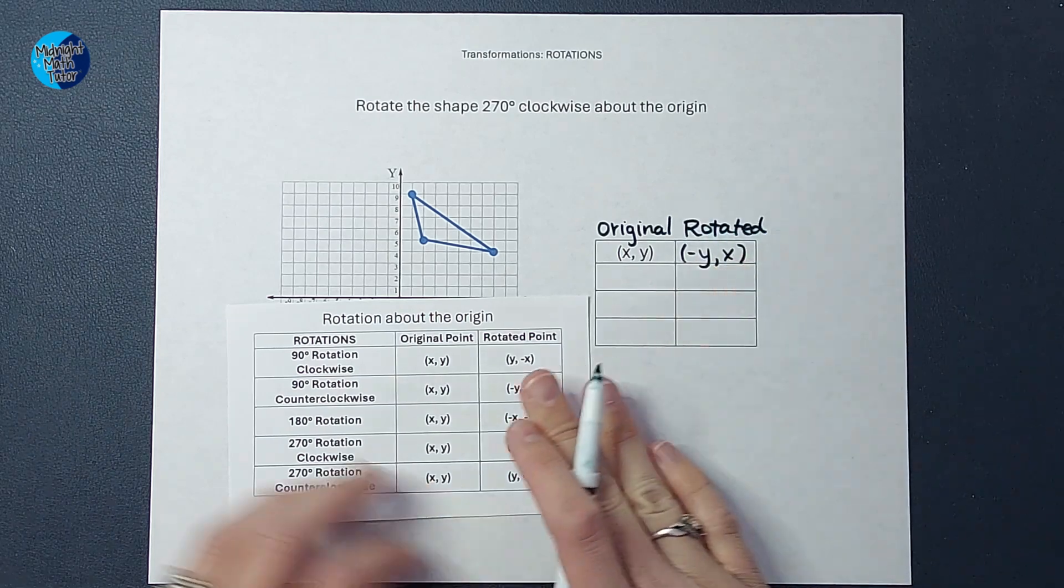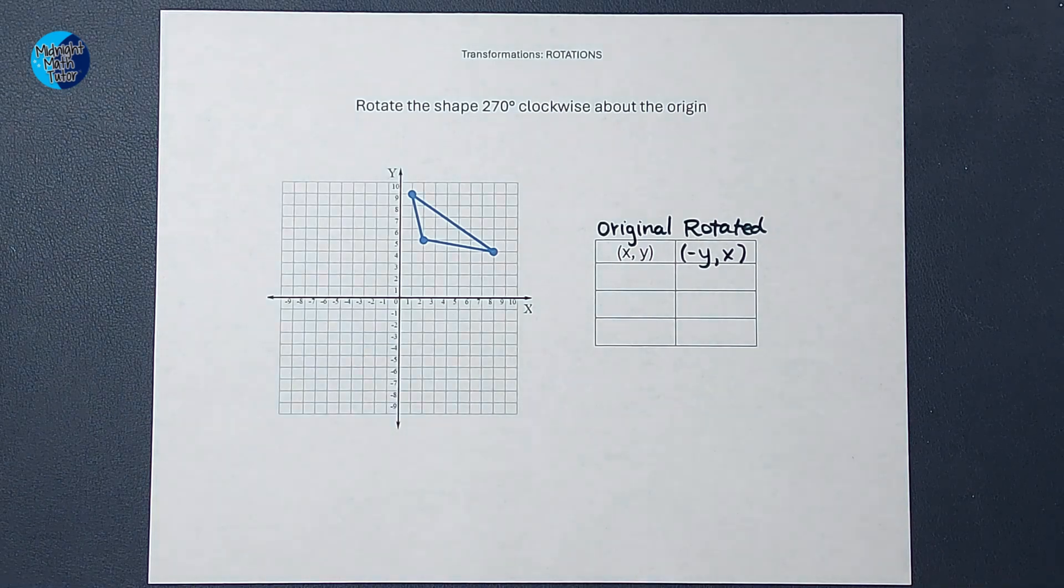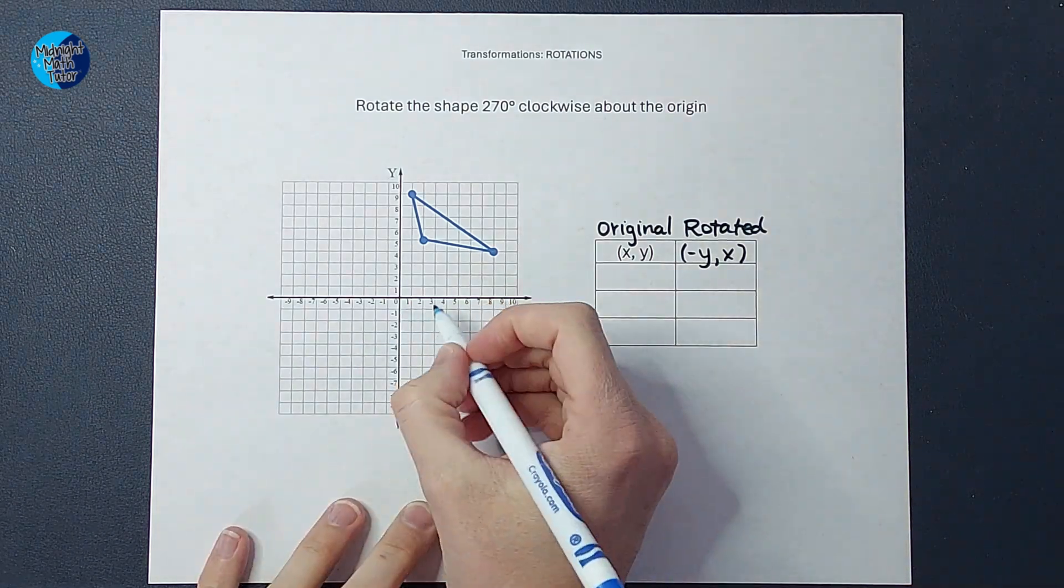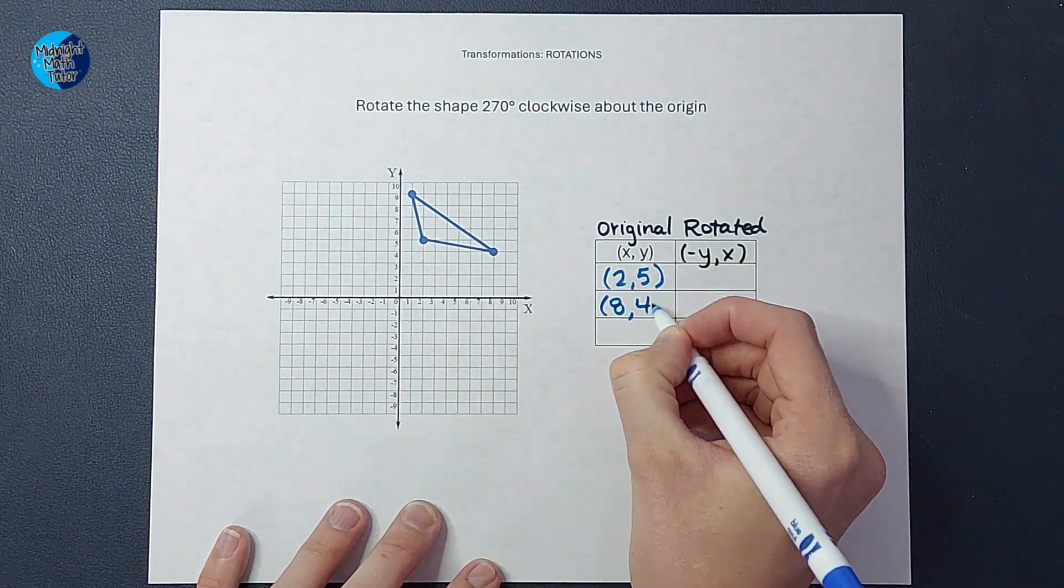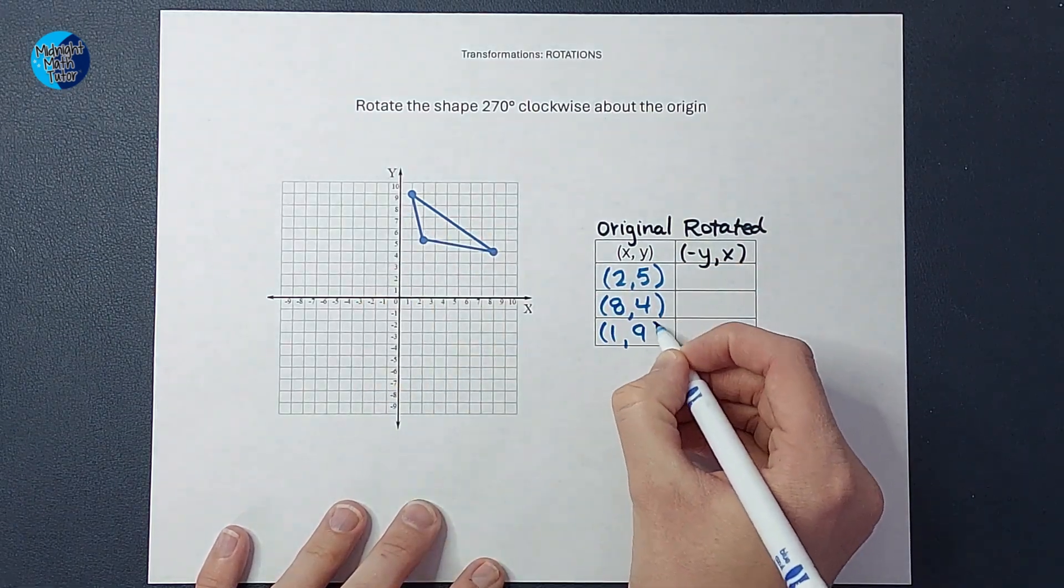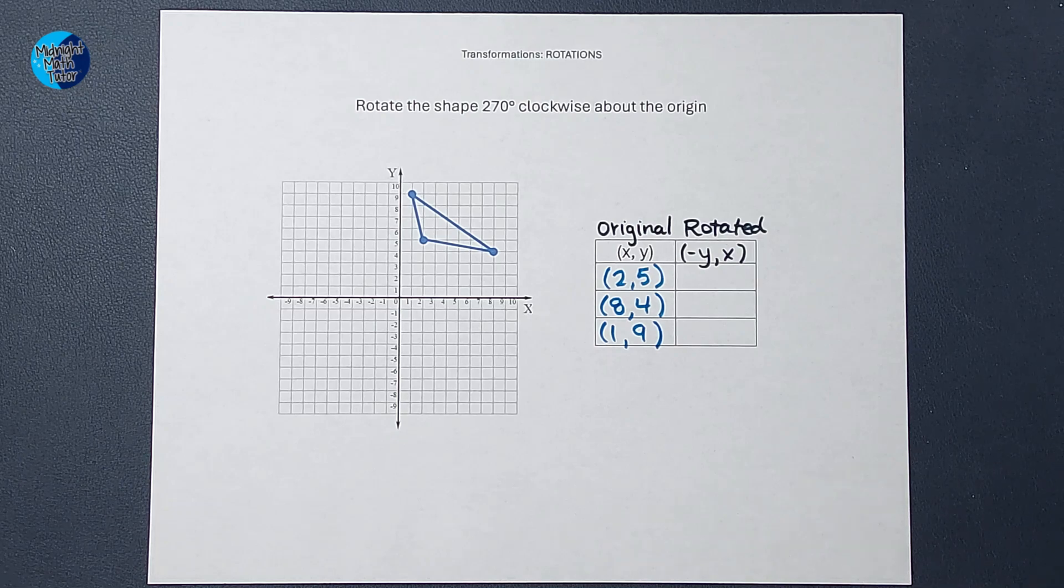So first thing I'm going to do is figure out the ordered pairs of these points on this triangle. All right, those are my original points.